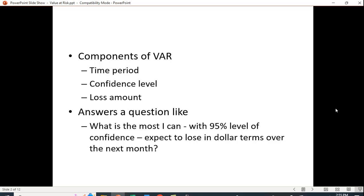What are the components of VAR? The time period, the confidence level, and the loss amount. For example, it answers a question like: what is the most I can with 95% level of confidence expect to lose in dollar terms over the next month? We care about that. That's what banks care about, insurance companies care about. That's what we all care about. If we have a portfolio of stocks, how much can I lose over the next month or the next year with some level of confidence?